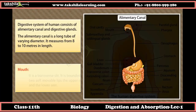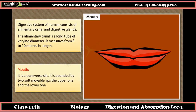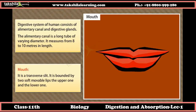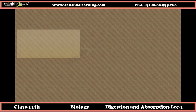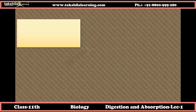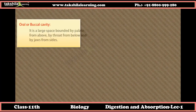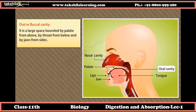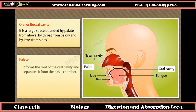The first part of the alimentary canal is the mouth. It is a transverse slit bounded by two soft movable lips — the upper and the lower. The oral or buccal cavity is a large space bounded by the palate from above, by the throat from below, and by the jaws from the sides.